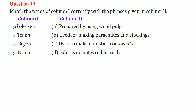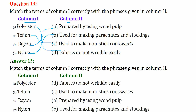Match the terms with the phrases. Polyester: polyester fabrics do not wrinkle easily. Nylon: nylon is used for making parachutes and stockings. Teflon: Teflon is used for making non-stick cookware. Rayon: rayon is prepared using wood pulp.